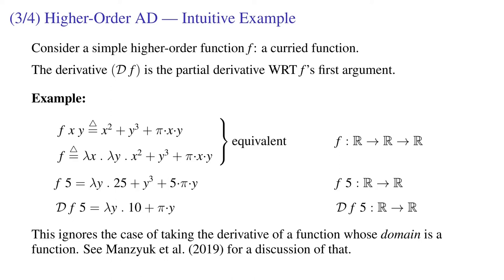So f of x, y equals x squared plus blah, blah, blah. We can take f at the point 5, and get a function from y to 25 plus y cubed, blah, blah, blah. We can take the derivative of f at 5,